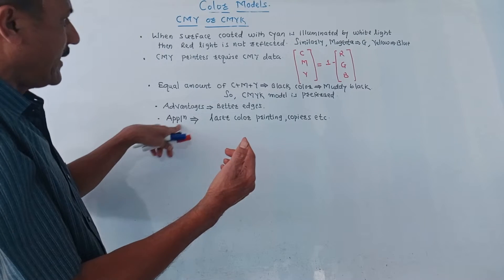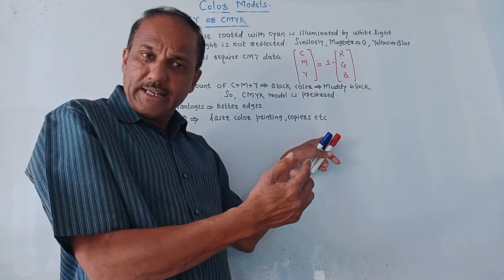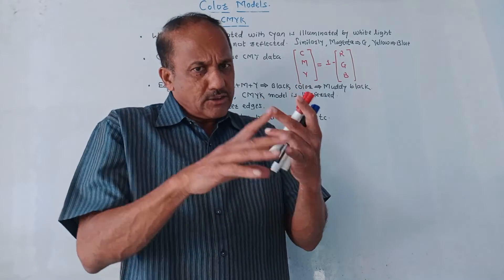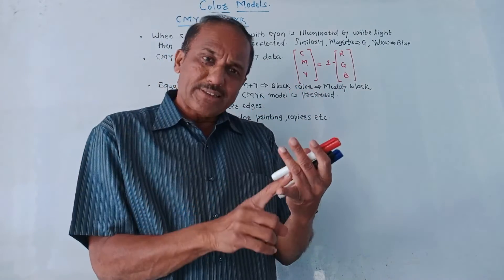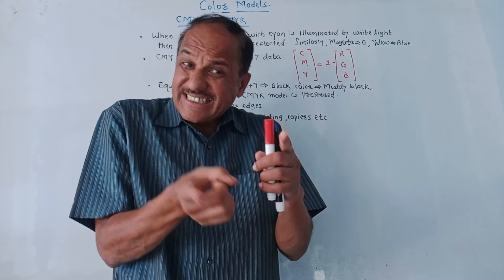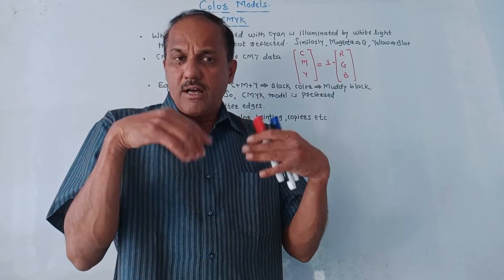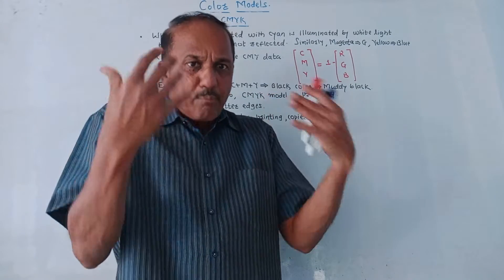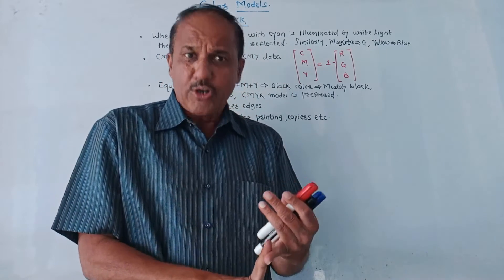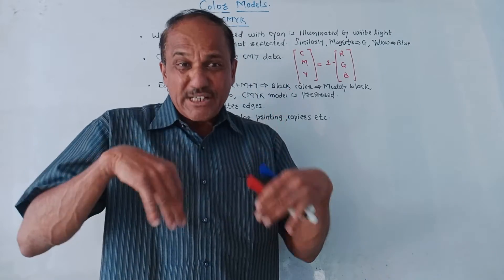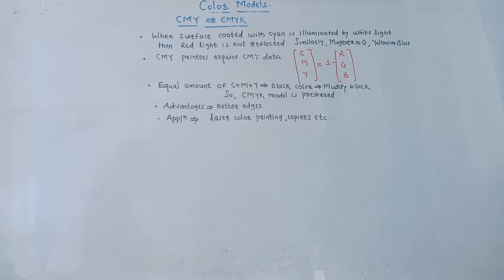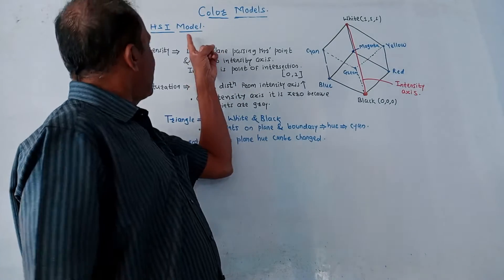Applications of CMY are that it is used for laser color printing or copiers. We have studied that the RGB model is not following the human visual system — it is a simple model and identified easily, but description of an image using RGB is complicated as far as the human visual system is concerned. So the RGB color model is not suitable for description of an image; it is better only for generation of an image.